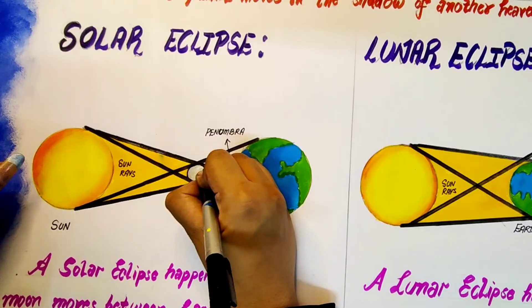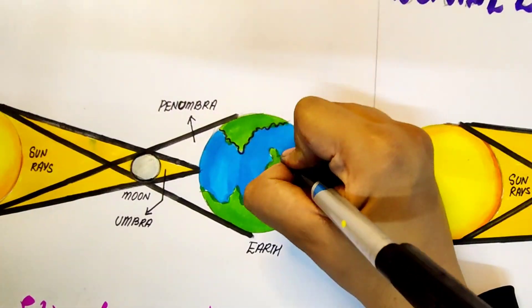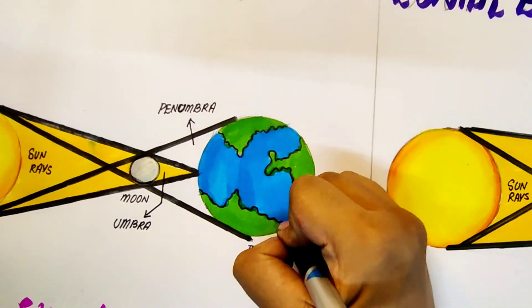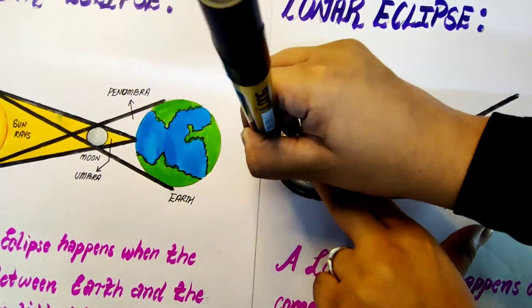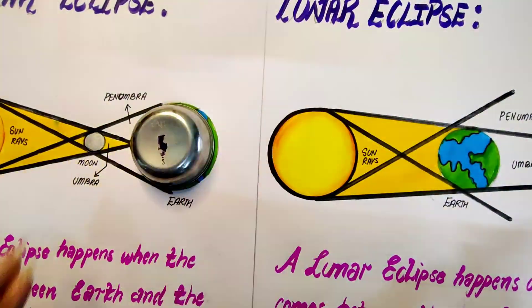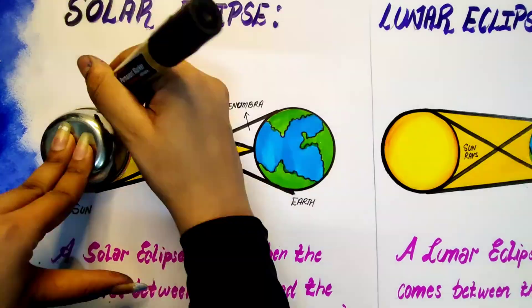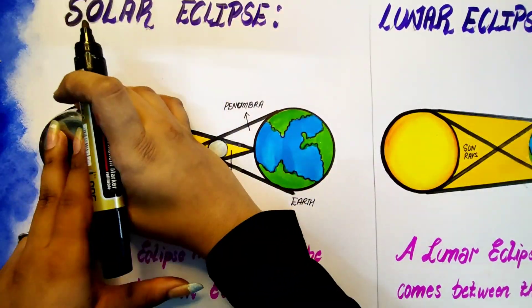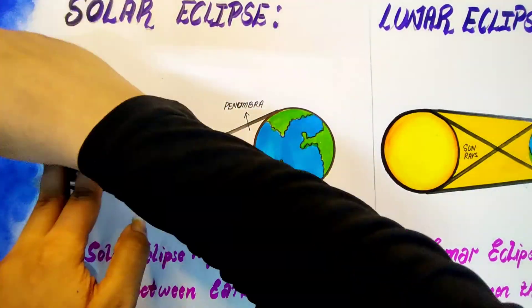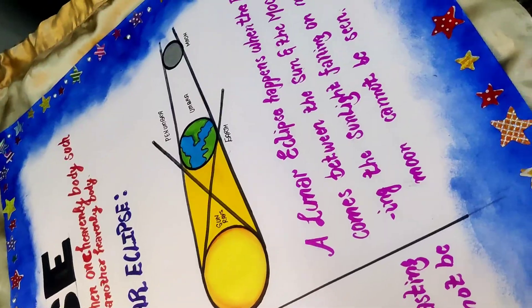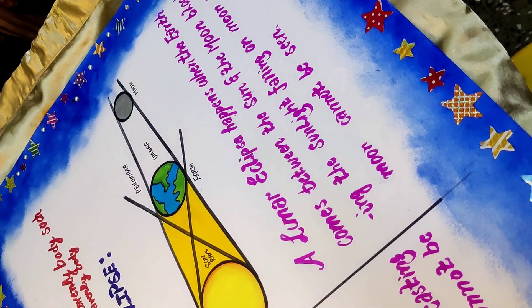Now here I am marking all the diagrams — you can pause the video and see it more efficiently. Now for the outlining of sun, earth and moon, I have used a bold black marker. So here a chart for solar and lunar eclipse is ready.